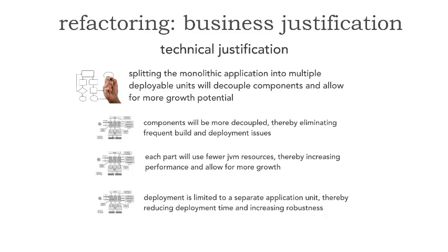Notice some of these words I'm using: decoupled, JVM resources, separate application unit, robustness. No business user is ever going to pay for this. You'll get a response like: 'Can't we just buy more JVMs?' — that's a Java virtual machine — 'Can't we just buy some more of those? How much are they?' The point is most business users will not understand this kind of technical justification.